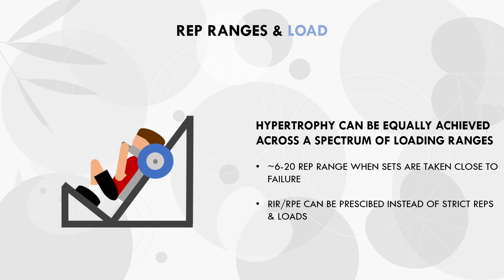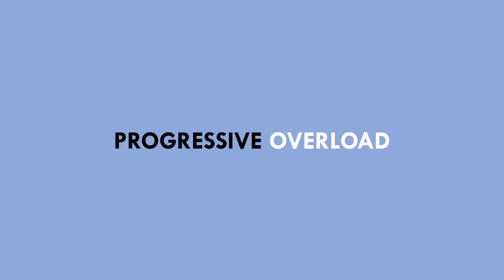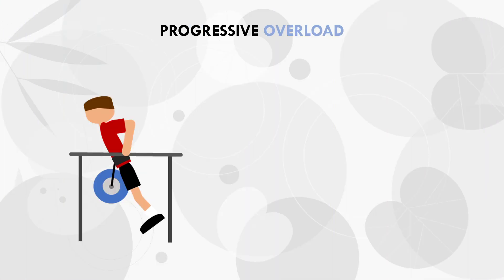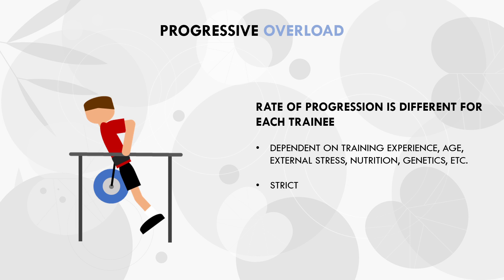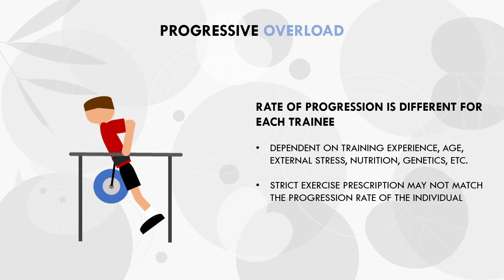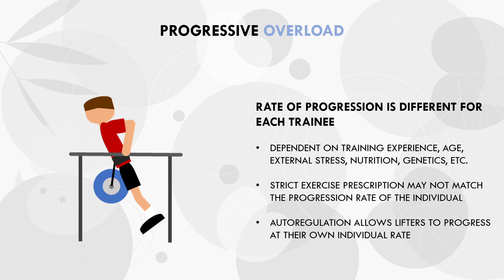The other primary benefit is for progressive overload. It is impossible to predict the rate of progression for each trainee — each lifter's rate of progression will differ based on training experience, age, external stress, nutrition, genetics and more. Some trainees will progress faster while others will progress slower, so prescribing strict rep ranges and loads each week may not match the individual rate a lifter can progress. Lifting performance is also likely to vary from session to session based on sleep, motivation, lifting environment, time of day, and external stress. Auto-regulation therefore allows lifters to observe trends in performance over time and progress at their own individual rate.